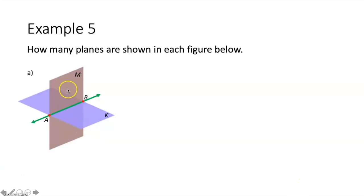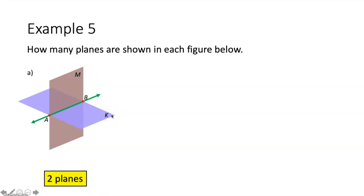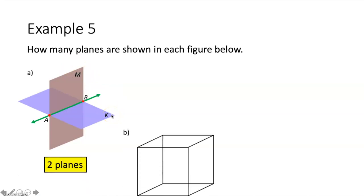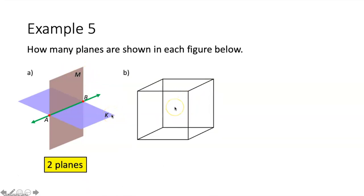Example five says how many planes are shown in the figure below. Here we have plane M and plane K, and those planes intersect at line AB. So in this figure we can see only plane M and plane K — there are two planes in this figure. Part B: we have a cube. The cube has a top and a bottom considered as planes, plus four sides, so we would have six planes.